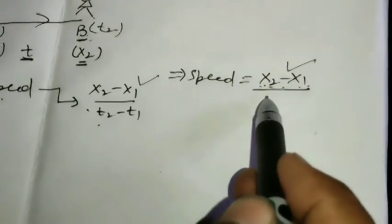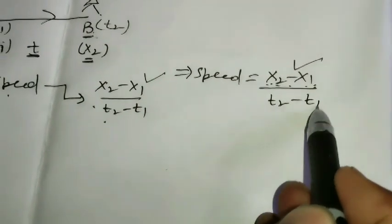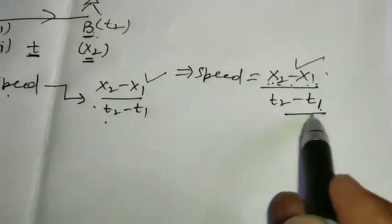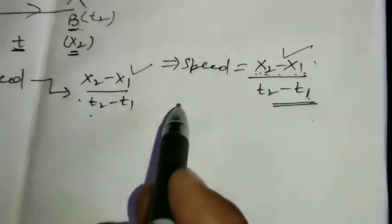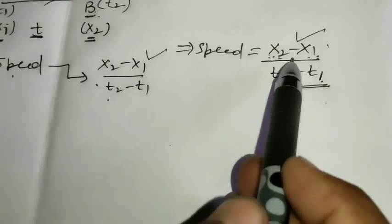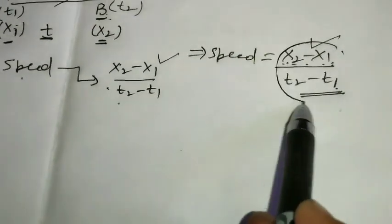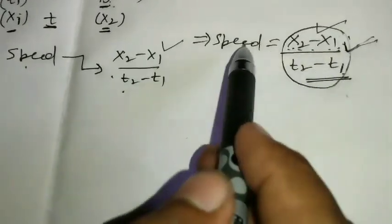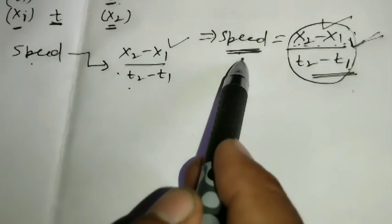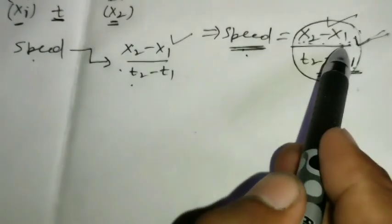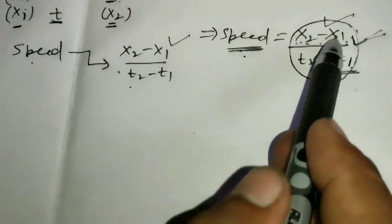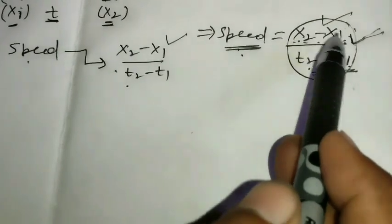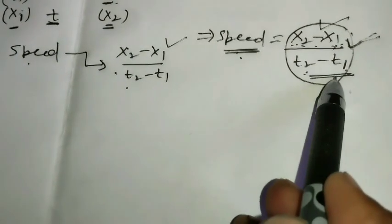You need a fixed relation between time and time. When this value changes, then the value of speed will also be different. x2 minus x1, t2 minus t1 are independent quantities. x2 minus x1 is independent, t2 minus t1 is independent.